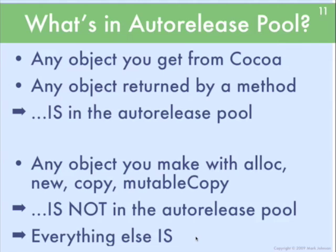If you remember this, your memory management woes will mostly start to clear up. Not only do you remember this in terms of figuring out whether a particular object is in an auto-release pool or not, but you have to remember this when you're writing your own code. Any time you return an object from a method, you should have already put that object into the auto-release pool so that this convention is kept. Any object returned by any method should be in the auto-release pool, so if it's your method returning the object, you have to make that true by passing the object the auto-release message.